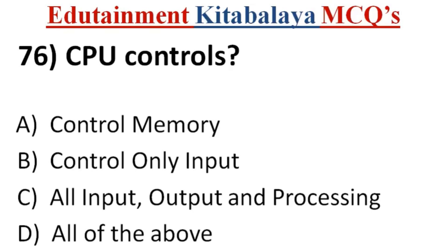Question number 76. CPU controls? A. Control memory. B. Control only input. C. All input, output, and processing. D. All of the above. Correct answer is C. All input, output, and processing.